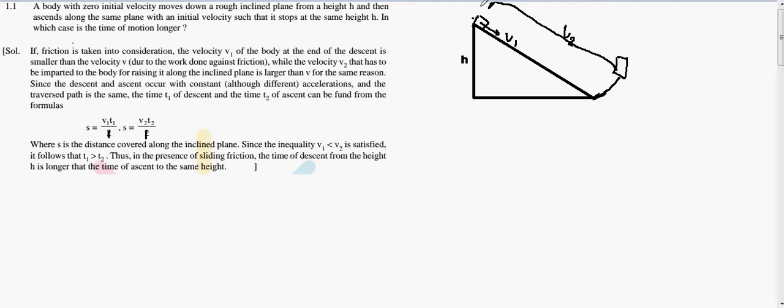Obviously, the velocity while descending will be larger. It is moving downward, hence the friction will be comparatively less compared to when it moves against the friction in the ascent case.